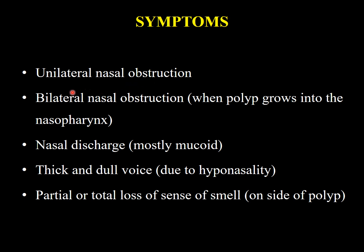In antrochoanal polyp, bilateral nasal obstruction can occur when the polyp enters the nasopharynx and blocks the opposite choana. Other symptoms include nasal discharge — mostly mucoid type — thick and dull voice due to hyponasality, partial or total loss of sense of smell on the side of the polyp, and sinusitis depending on polyp size.